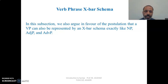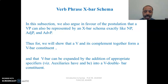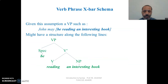We now move to another lexical category: the verb phrase. We argue that a VP can also be represented by an X-bar schema, exactly like the adjective phrase and adverb phrase. We will show that a verb and its complement together form a V-bar constituent, and that a V-bar can be expanded by the addition of appropriate specifiers — auxiliaries 'have' and 'be' — into a higher V-bar projection.